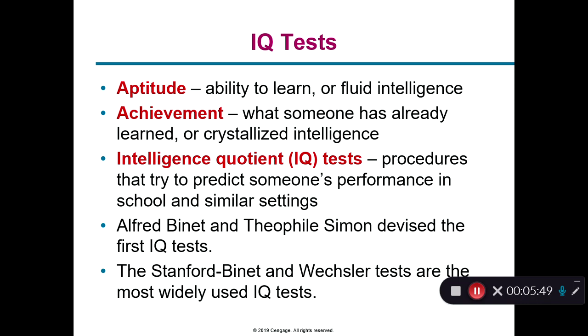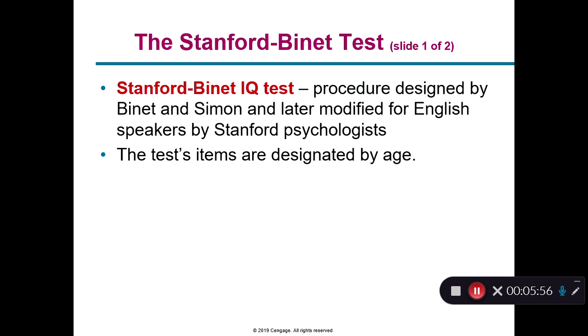The IQ test, called an intelligence quotient, is a compounding of many different skill sets and your ability to do well on those skill sets, hopefully balanced for culture. It measures your IQ based upon your age and where you should be regarding development. We have a bunch of different tests: the Alfred Binet test, the Stanford-Binet, and the Wexler test — these are the most popular in modern times.